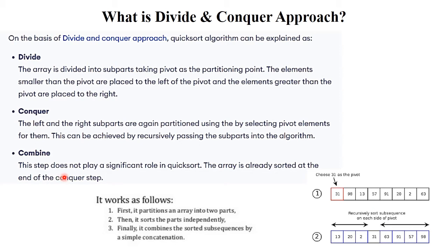The basic steps of quick sort are: first, partition the array into two parts — left, right, and mid as pivot element. Then sort the parts independently: again sort the left part by finding the pivot element, and again solve the right part by finding the pivot element. Finally, combine all sorted subsequences by simple concatenation. At the last step, all elements are sorted. This is the divide and conquer approach used in quick sort implementation.